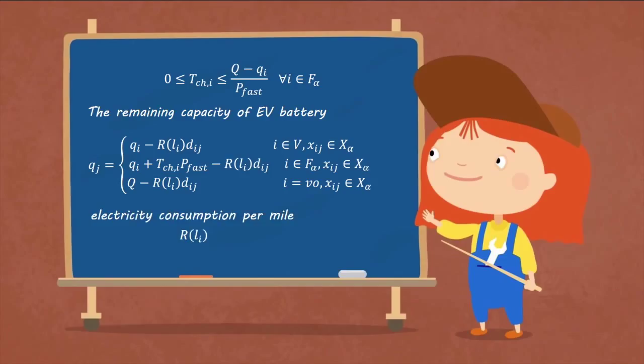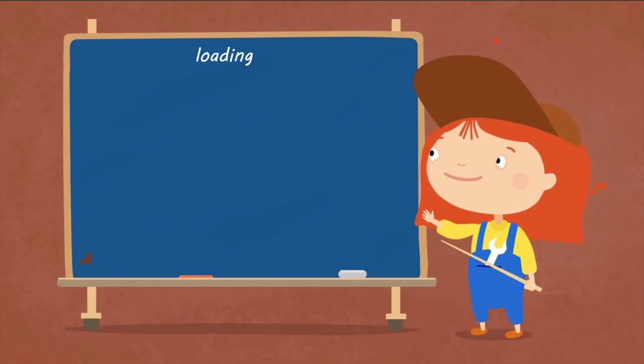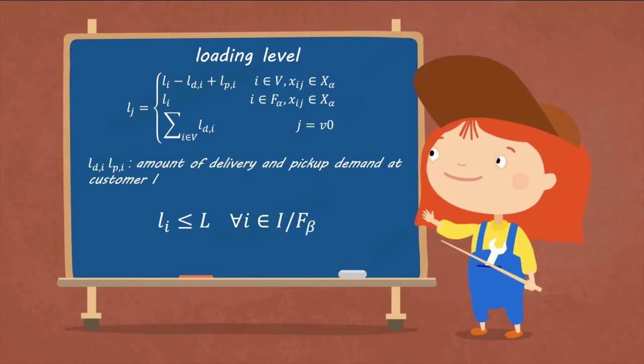And I is the function of electricity consumption per mile, which is related to the EV loading level L. The loading level L-J is calculated where LDI and LPI are the amount of delivery and pickup demand at customer I respectively. The second constraint is that the EV loading level should be less than the maximum L.